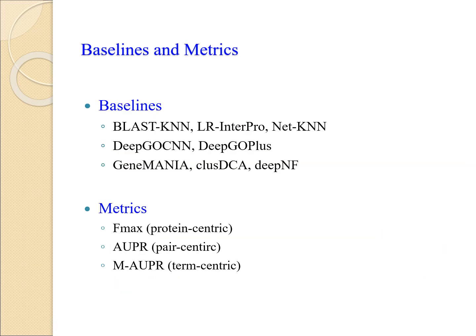We compared DeepGraphGO with five baseline methods: BlastKNN, LRInterpro, NetKNN, DeepGOCNN, and DeepGOPlus. BlastKNN, LRInterpro, and NetKNN are the most important component methods of the state-of-the-art ensemble method NetGO, using sequence similarity, InterPro features, and PPI network respectively. LRInterpro uses the same InterPro feature as DeepGraphGO to train logistic regression for each GO term independently. DeepGOCNN uses raw protein sequences as inputs with a convolutional layer and a pooling layer to obtain protein representations. DeepGOPlus uses a consensus ensemble method to integrate DeepGOCNN and a diamond-based approach.